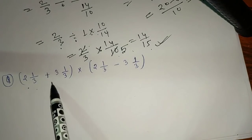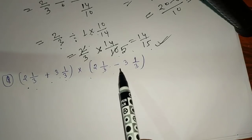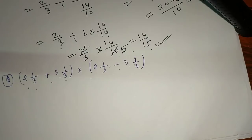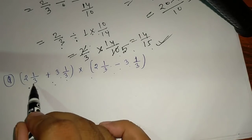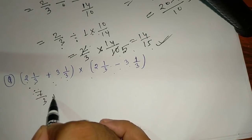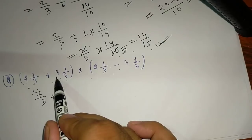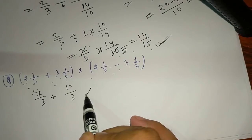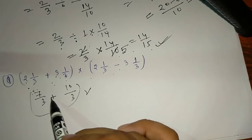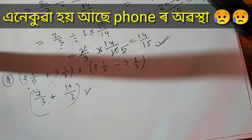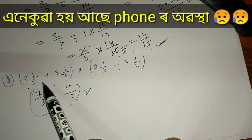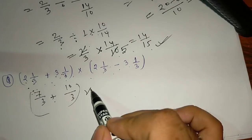Next: (2 and 1/3 + 3 and 1/3) into (2 and 1/3 minus 3 and 1/3). Convert to improper fractions: 2⅓ = 7/3, 3⅓ = 10/3. We can take common factor 1/3. So we have (7/3 + 10/3) × (7/3 - 10/3). Simplify: 17/3 × (-3/3) = 17/3 × (-1) = minus 17/3.